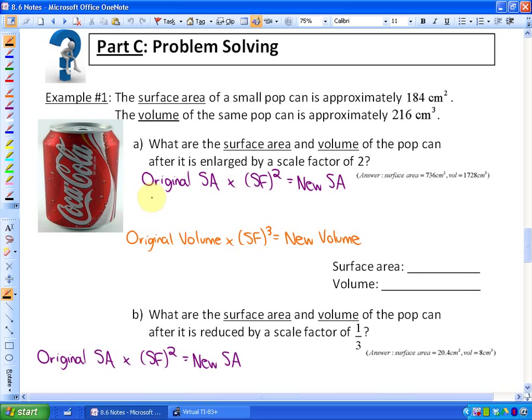we know that the new surface area will be the original surface area times the scale factor squared. So in other words, the original surface area is 184 cm squared and the scale factor is 2, so it's times 2 squared, which is equivalent to 184 times 4, which is equivalent to 736 cm squared. So the new surface area is 4 times larger because that's the scale factor squared than the original surface area.